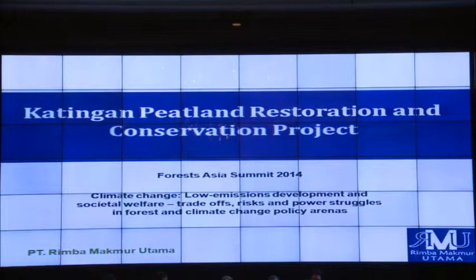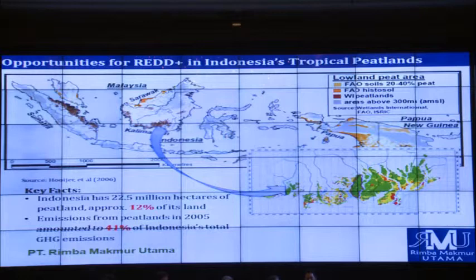Indonesia has 22 million hectares of peatlands — approximately 12% of its land — but they account for almost half of the country's emissions. If we can conserve our peatlands, we should be able to significantly reduce emissions. Our project area is about 200,000 hectares — roughly three times the size of Singapore — in Central Kalimantan, almost 90% production forest and peatland forest. Some of the area is zoned as convertible production forest, meaning it can be converted into palm oil.